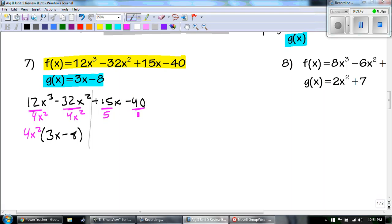Number 7 and 8. So what it's saying is we need to factor by grouping. I'm going to take f of x and I'm going to divide it by g of x using the given functions. So there's my g of x. There's my f of x. The first thing that I have to do is to factor my 12x cubed minus 32x squared plus 15x minus 40.